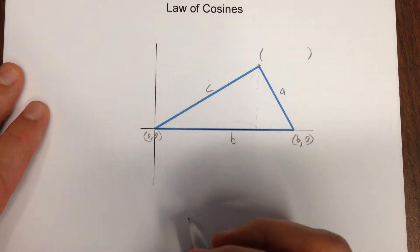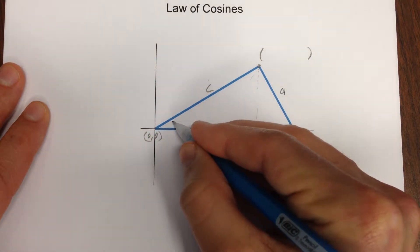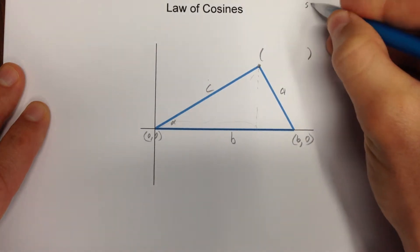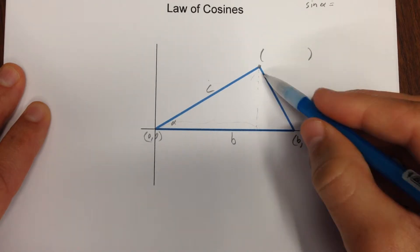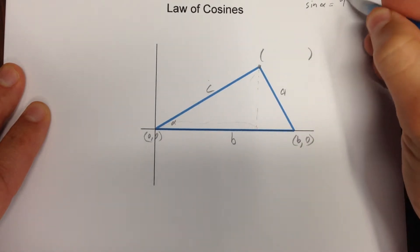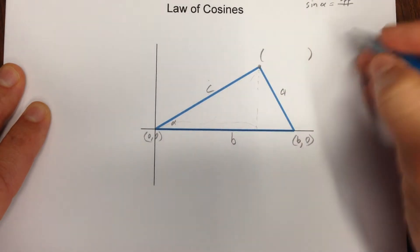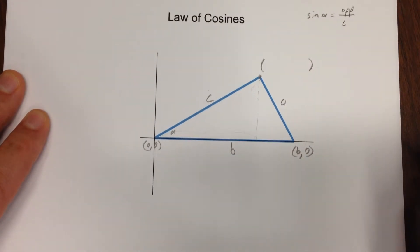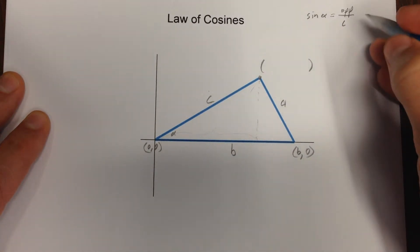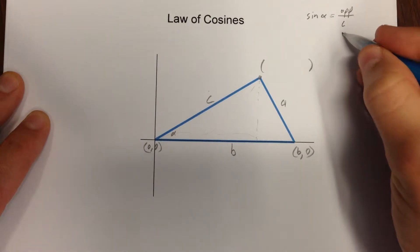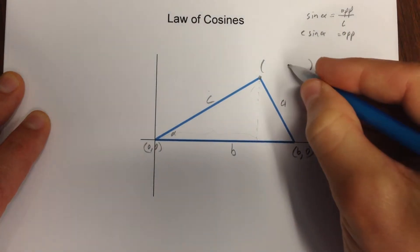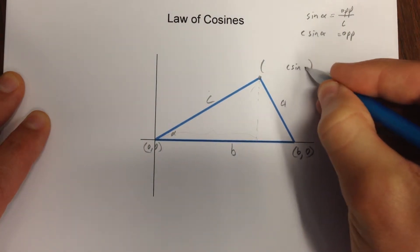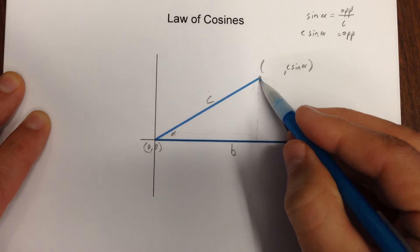If I knew that this angle was alpha, I know sine alpha is the opposite over my hypotenuse, and my hypotenuse happens to be C. That says that the opposite side is actually C sine alpha. So C sine alpha is the y-coordinate for that point.